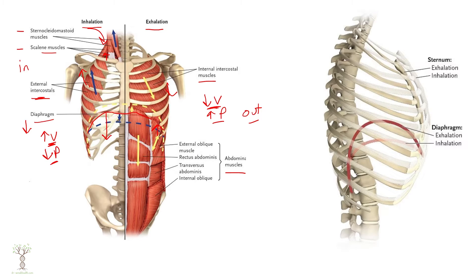In this side-view diagram showing the diaphragm: when the diaphragm contracts, it moves down, increasing the volume, which decreases the pressure, which makes us breathe in. During relaxed breathing, the diaphragm simply relaxes and moves back up when we breathe out.